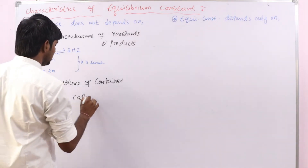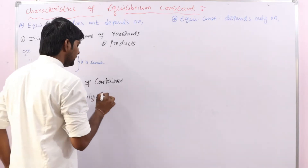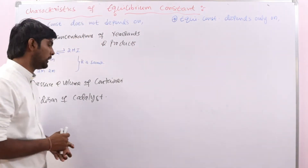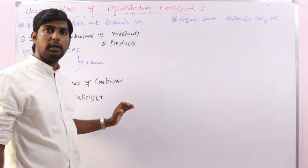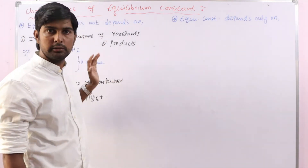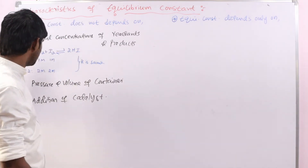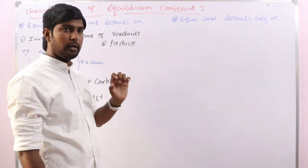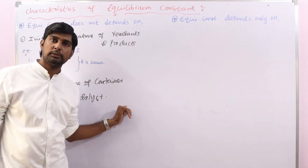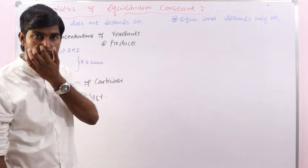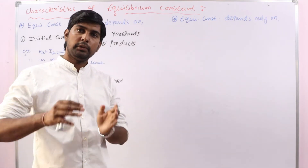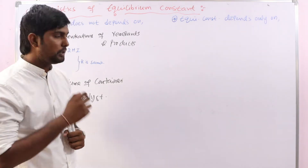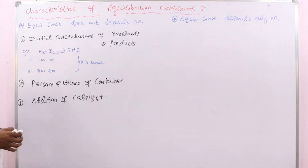The third factor is addition of a catalyst. Sometimes if a reaction is very slow we use a catalyst to speed up the reaction. If you add a catalyst, there is no change in the numerical value of K. Suppose K is 10 units with catalyst — without catalyst, the equilibrium constant is also 10 units for a particular reaction.